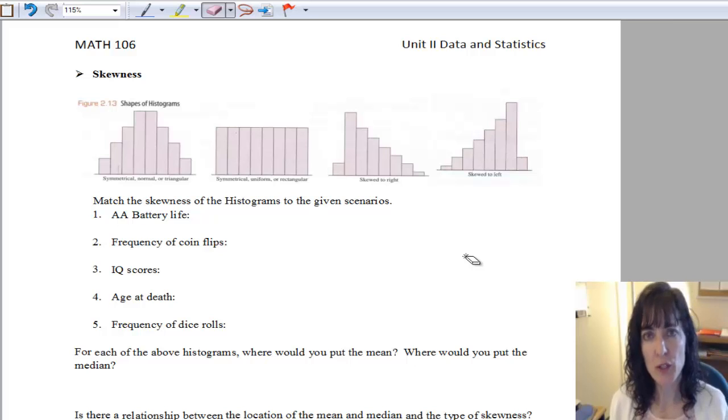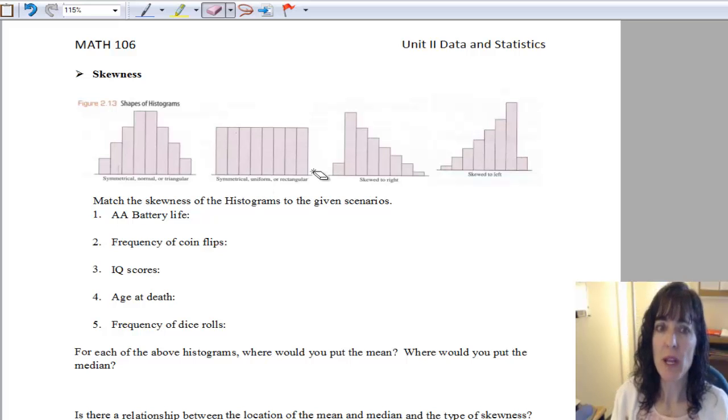So first thing we want to do is discuss skewness just a little bit. And if we make a histogram like we did for our assignment earlier, we can identify the shape of our data. And so we can tell does it have this kind of symmetric look to it, is it more rectangular where it looks like a big box, or is it sort of skewed like it's all going off to one side.